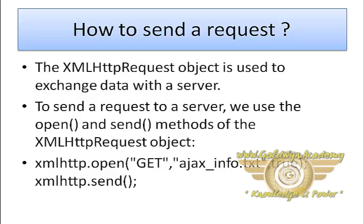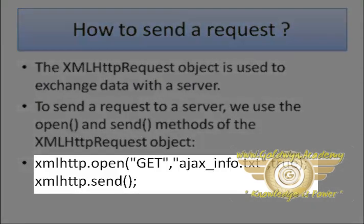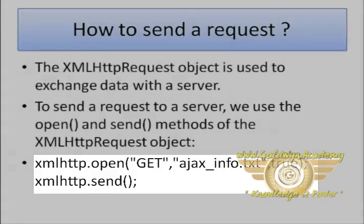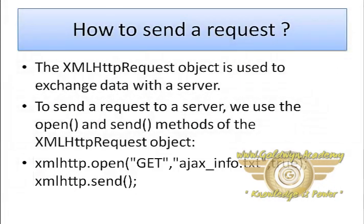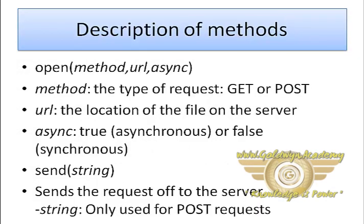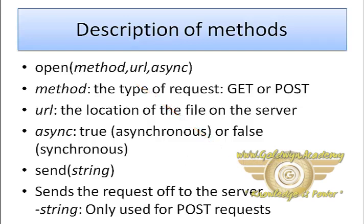The XMLHttp.open method accepts three parameters and it immediately precedes the XMLHttp.send method. The first parameter is the method — it is the type of request, either GET or POST. There is also a third method called HEAD but we do not use it generally.